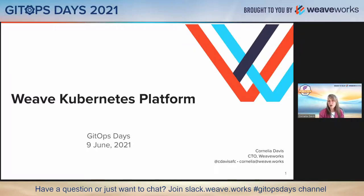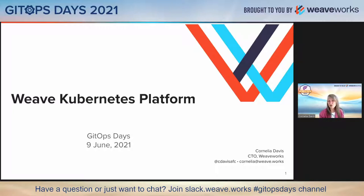You can imagine when I have lots of different teams and lots of applications, doing what I did manually against these different repositories and different clusters can get a little unwieldy. Furthermore, we don't want to give unfettered access to infrastructure — Kubernetes represents infrastructure in many cases — to application teams. Instead, we need the platform teams to control that access.